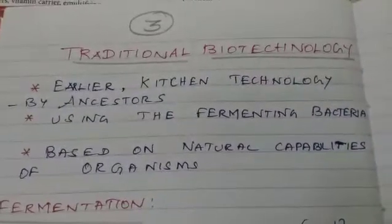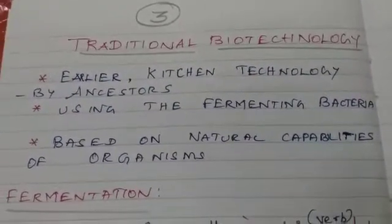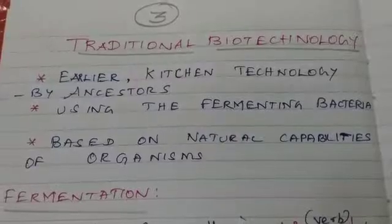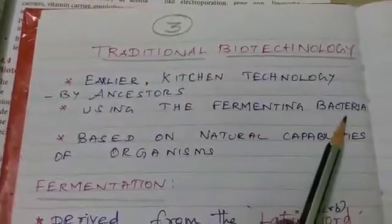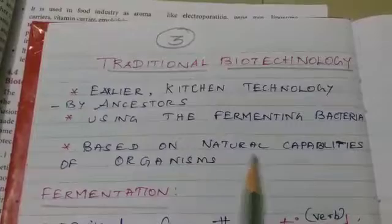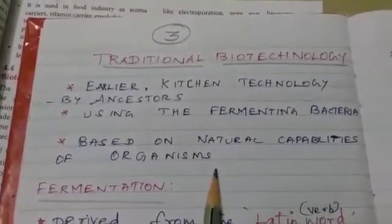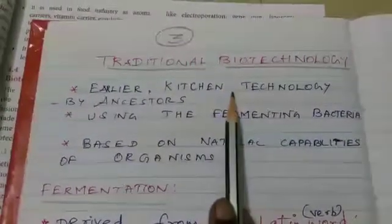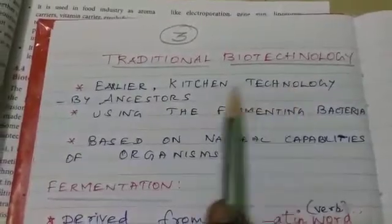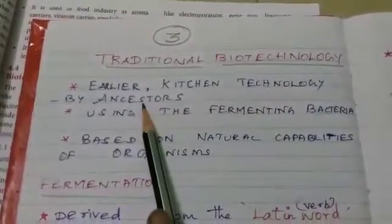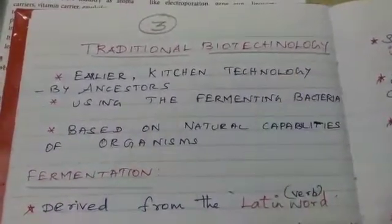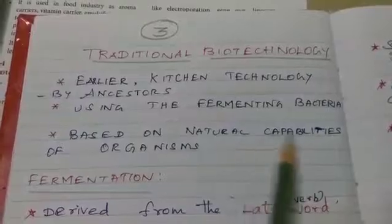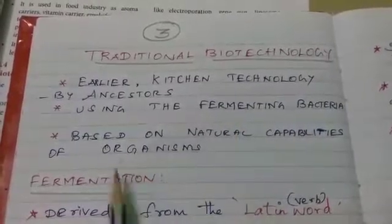Good morning, children. The next topic is traditional biotechnology. Traditional biotechnology means earlier technology used by ancestors, based on the natural capability of microorganisms — specifically fermenting bacteria. It is an early technology, also named as kitchen technology, the oldest technology followed by ancestors.